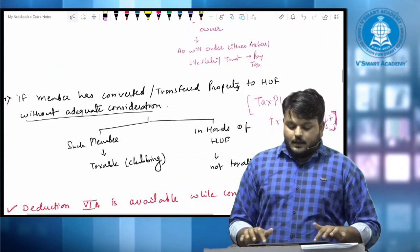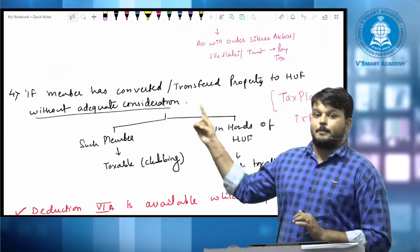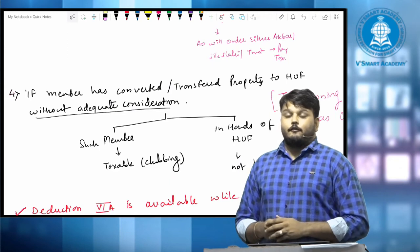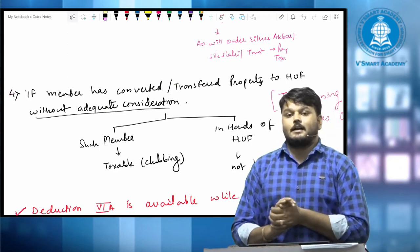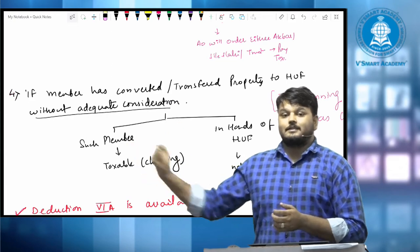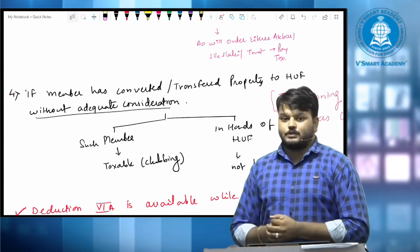And fourth, most important, if member convert their personal property into H.U.F. property for inadequate consideration, it will not be regarded as firm income. It will be regarded as person's income under the provisions of clubbing.